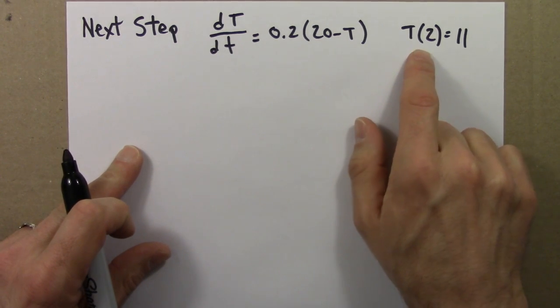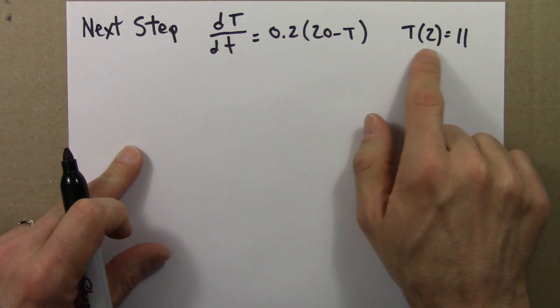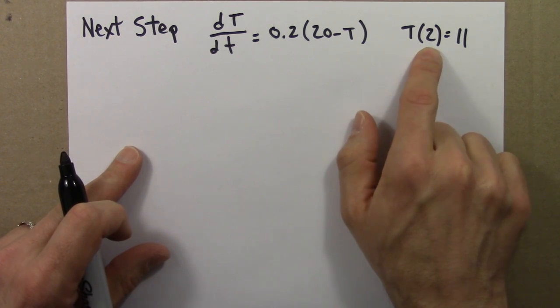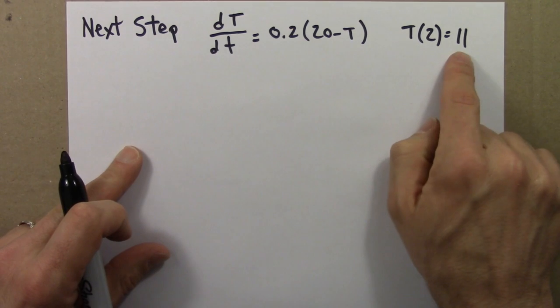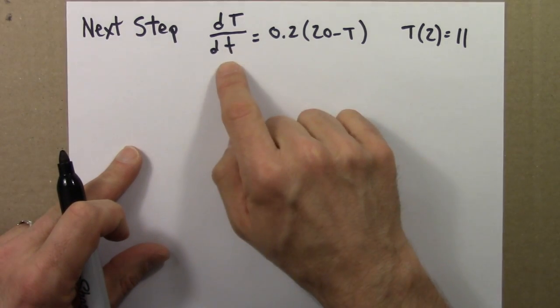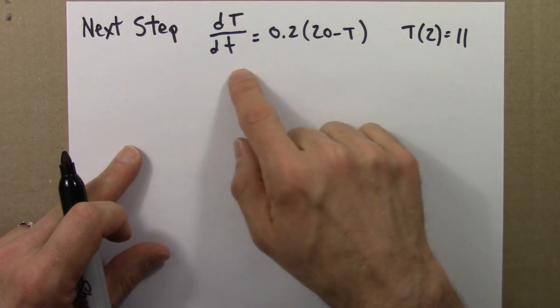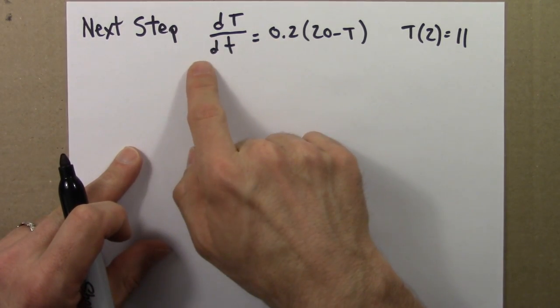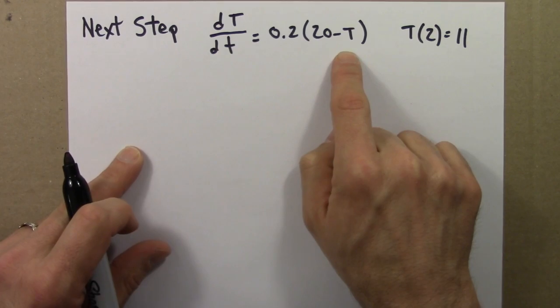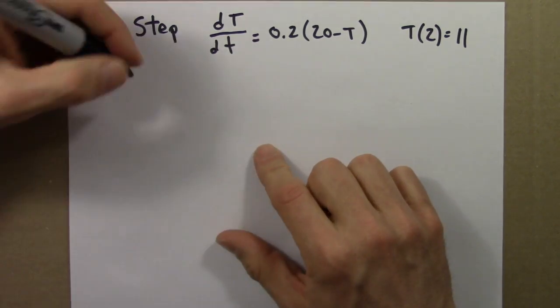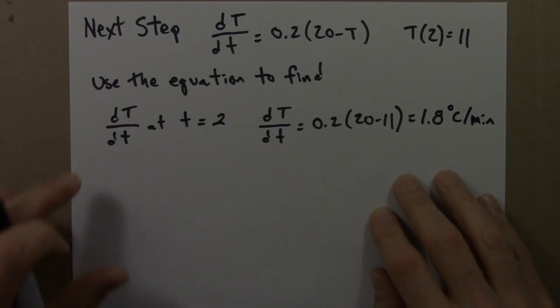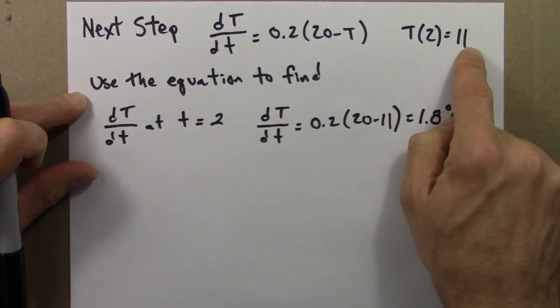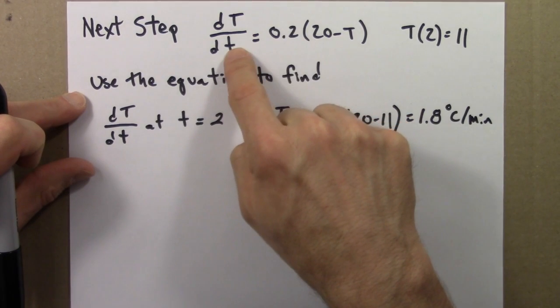But now let's see if we can figure out T of 4. I can figure out how fast the temperature is changing at time 2, assuming that the temperature is 11. What's the rate of change? Well, I just ask the equation. That's what the differential equation does. It's a rule that tells me how fast the temperature is changing if we know the temperature.